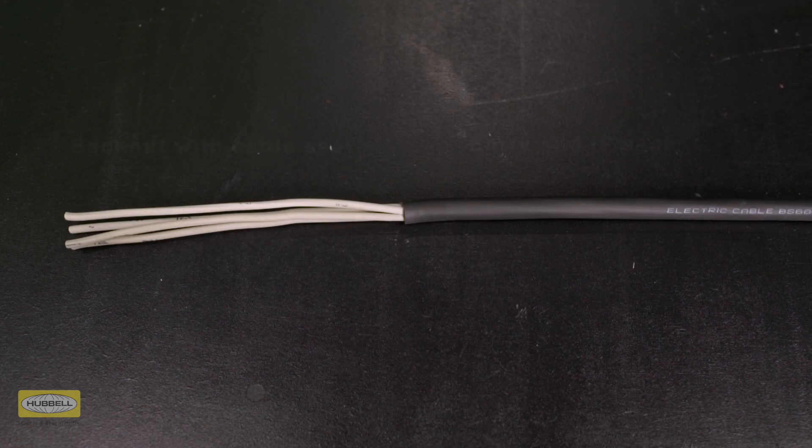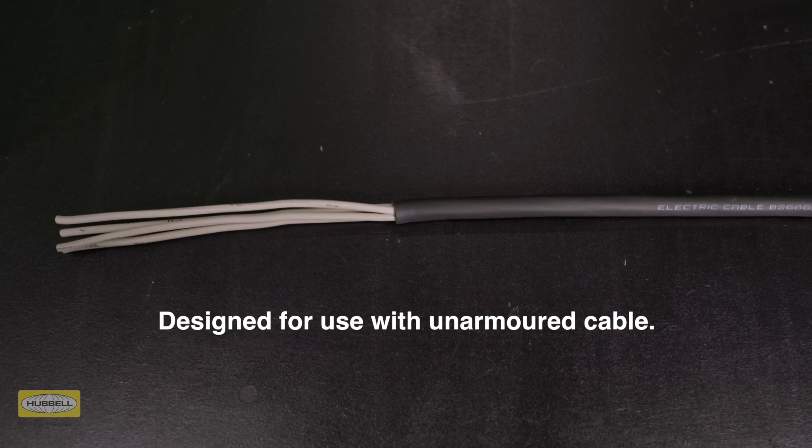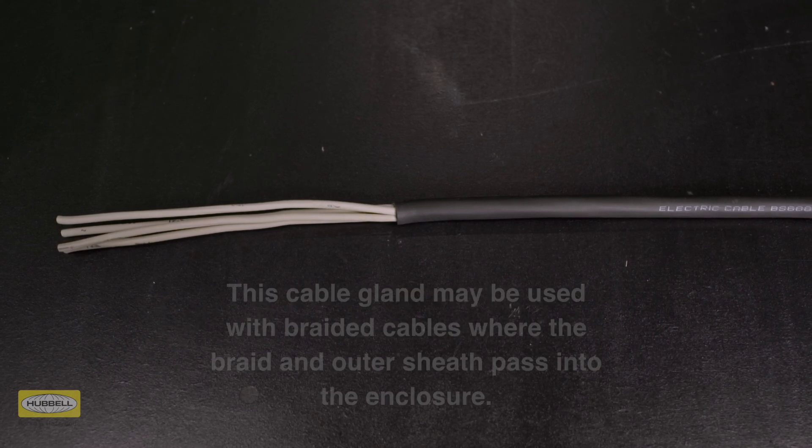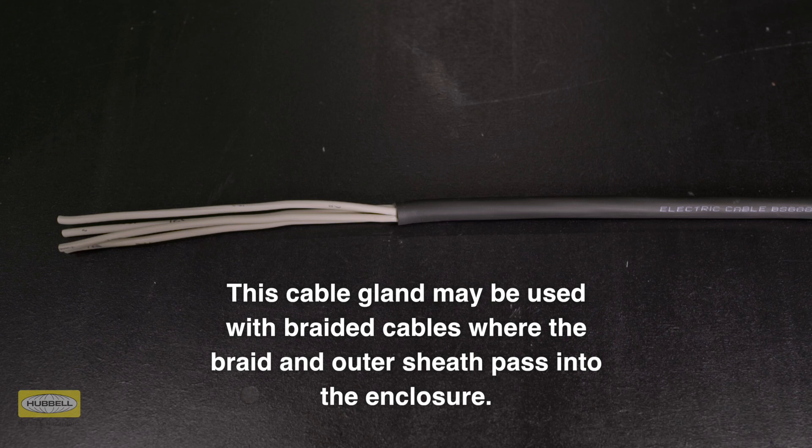This EXE cable gland is designed for use with non-armoured elastomer and plastic insulated cables. This cable gland may be used with braided cables where the braid and outer sheath pass into the enclosure. The braid must be suitably terminated inside the enclosure.